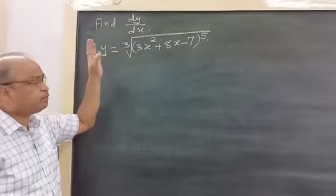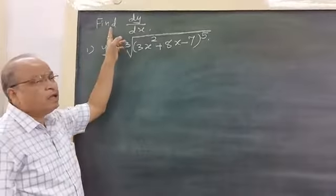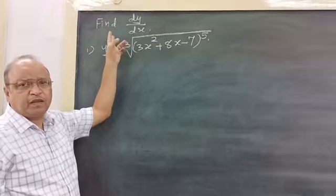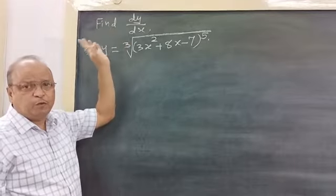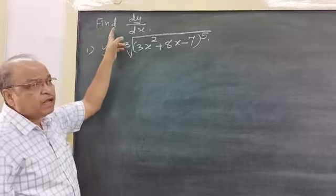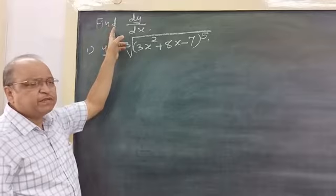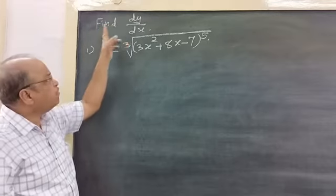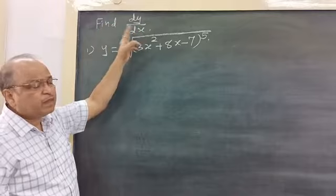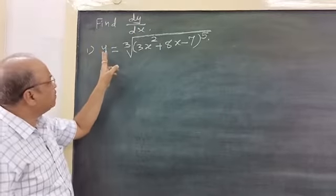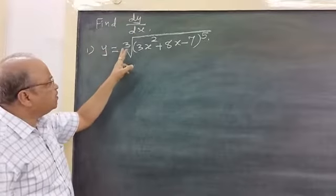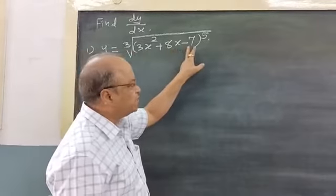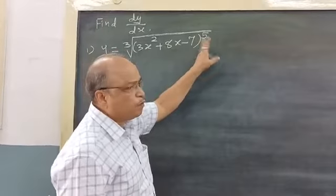Now, again we are repeating the same examples of chain rule. We continue from yesterday's examples. Find dy by dx. The first example is: y is equal to the third root of (3x² + 8x - 7) raised to the power of 5.